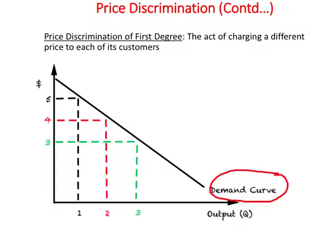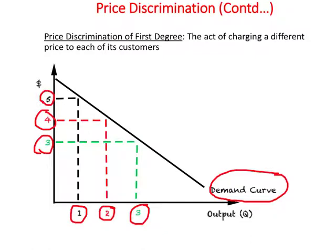Consider a demand curve for a product sold by a monopolist. The first customer is willing to pay $5, the second $4, and the third $3. If the monopolist charges a uniform price and wants to sell all three units, the maximum uniform price is $3, yielding total revenue of $9.